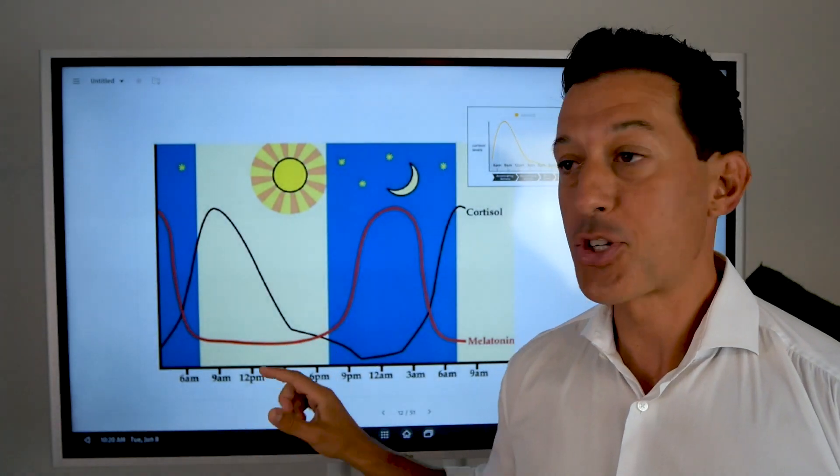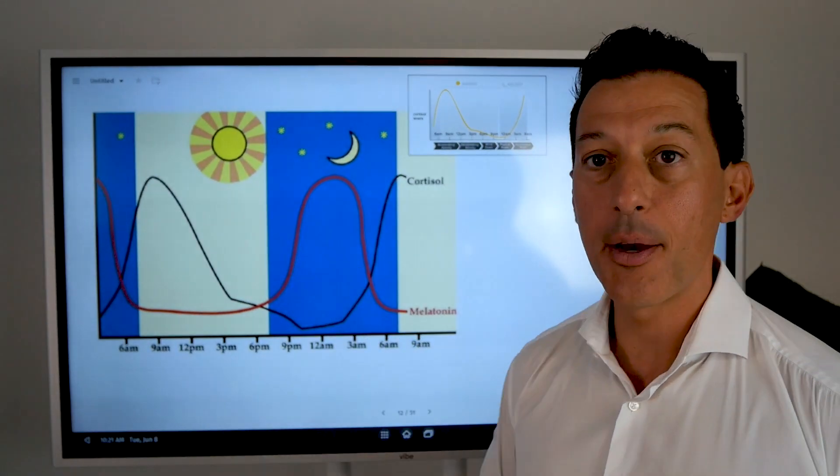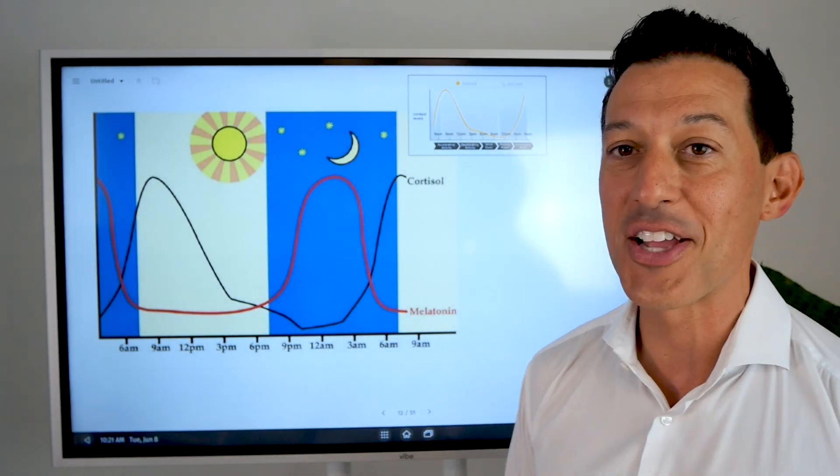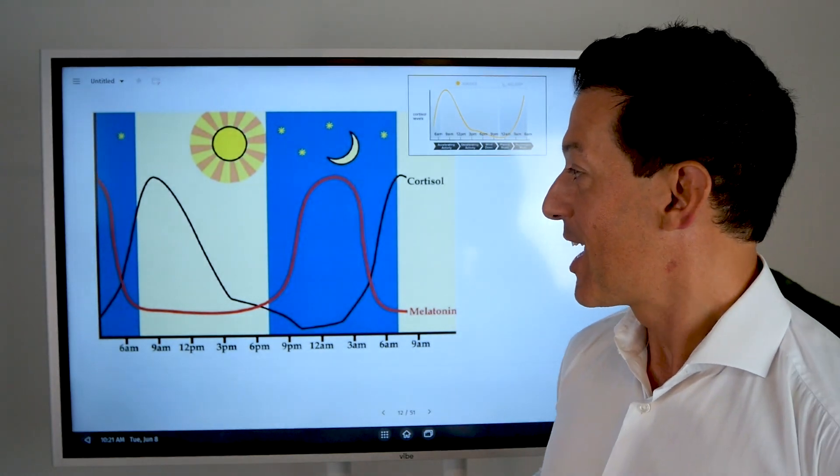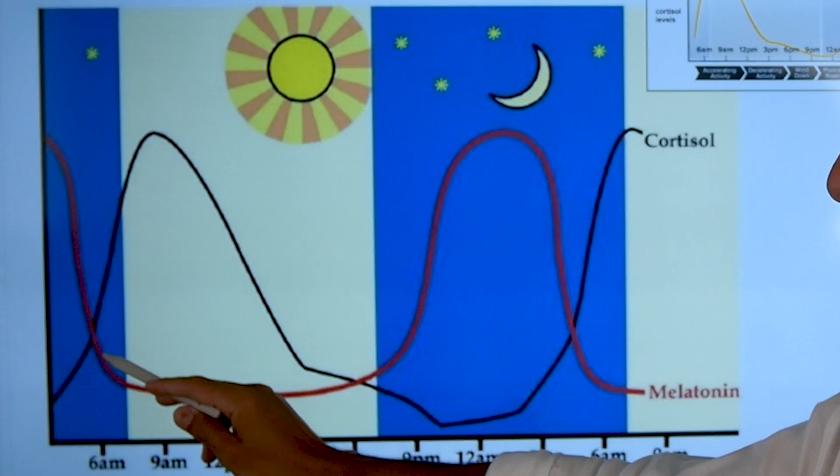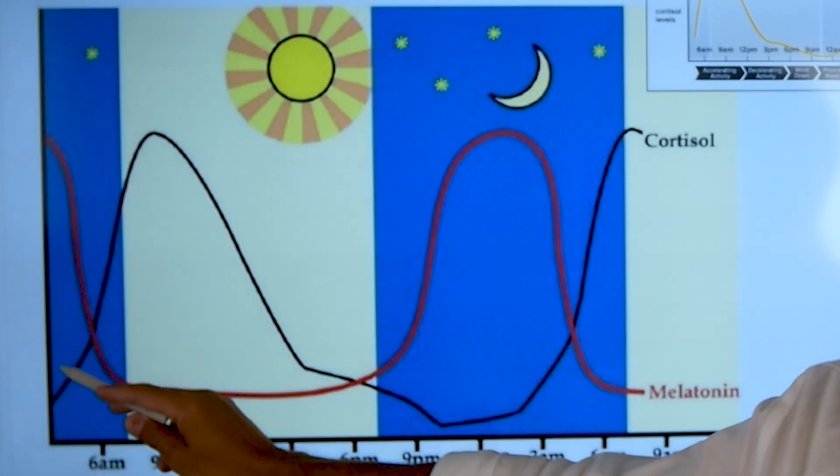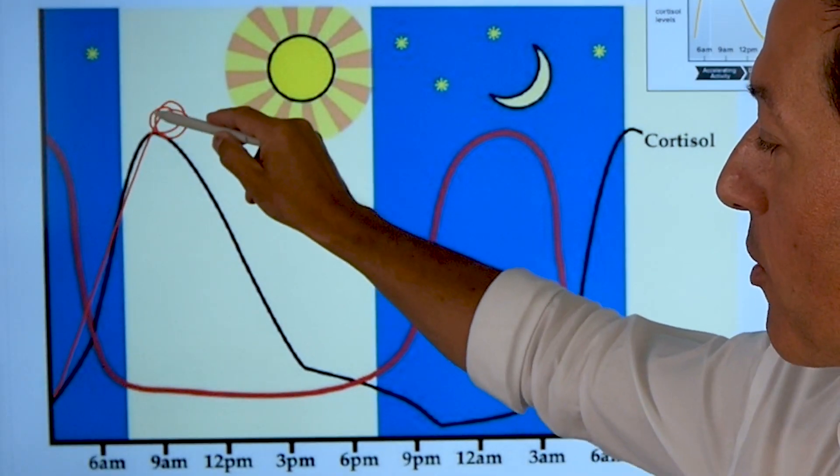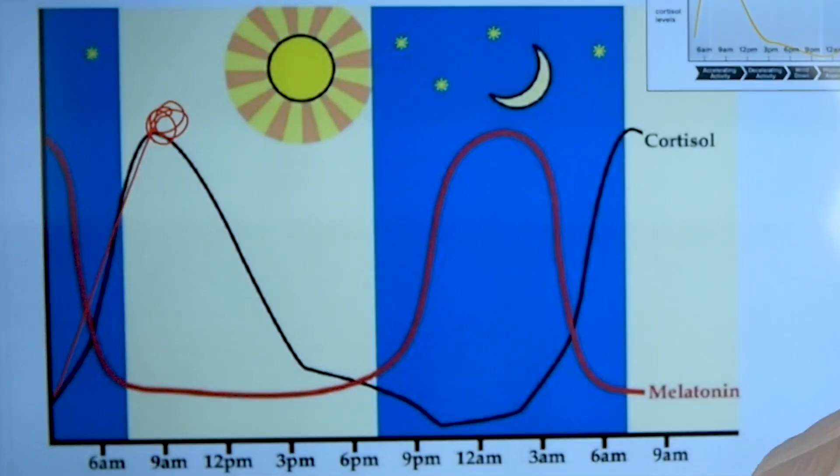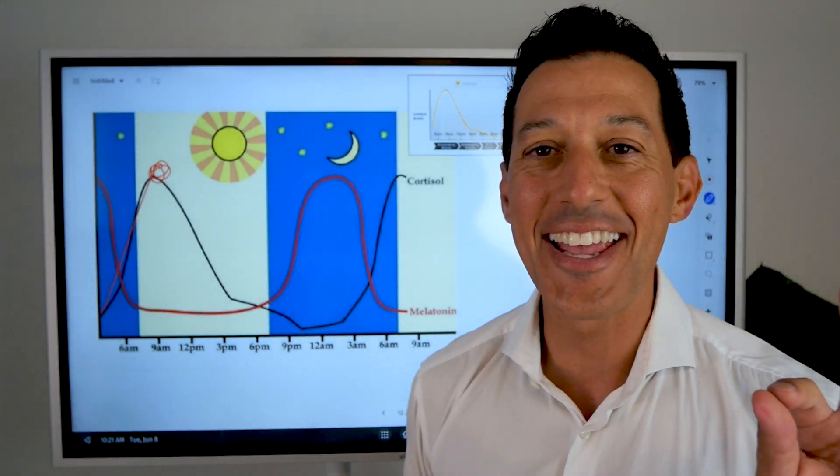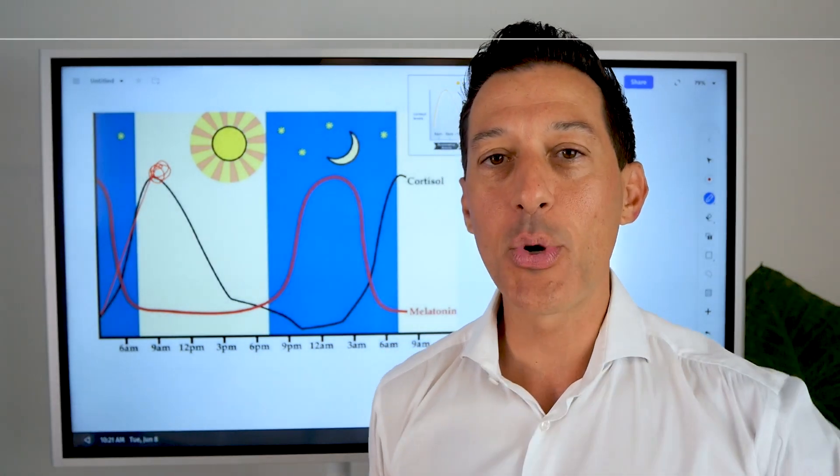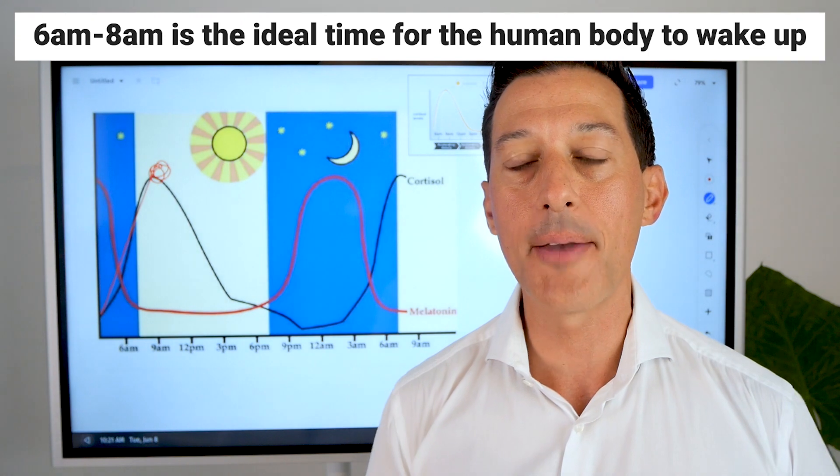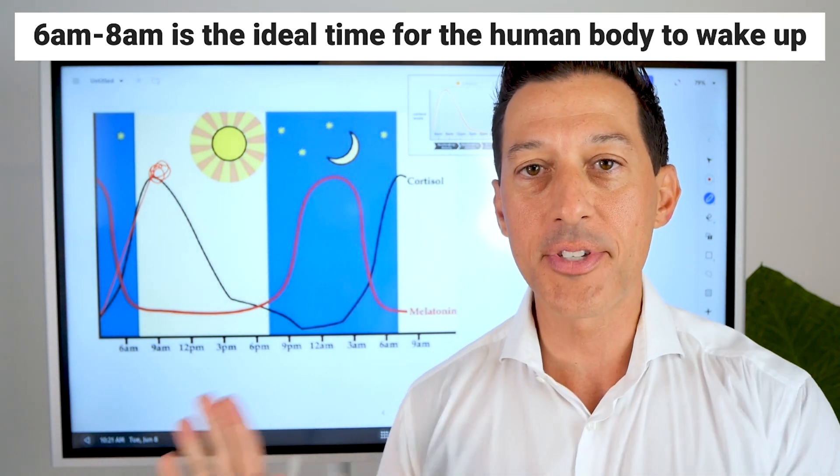This is a picture that I've actually put inside my book, The Rain Barrel Effect. What it is, is it shows you on this black line right here, cortisol during the day. You can see the sun starts to rise right here, between 6 and 8 AM. Between that timeframe is the ideal time for the human body to wake up.